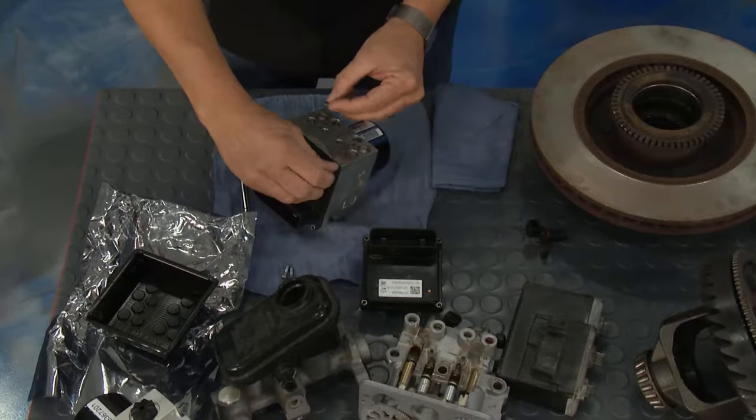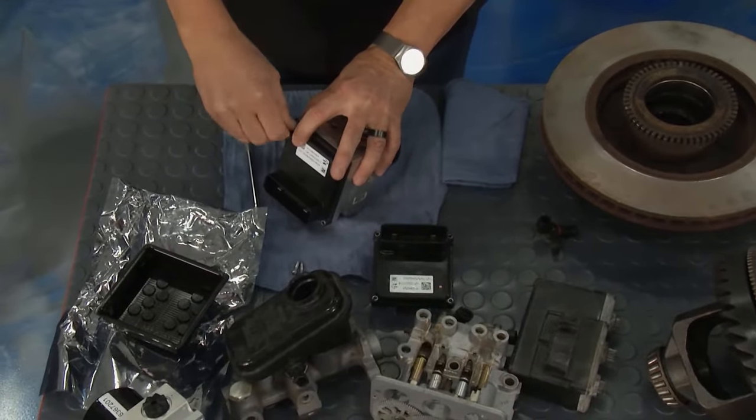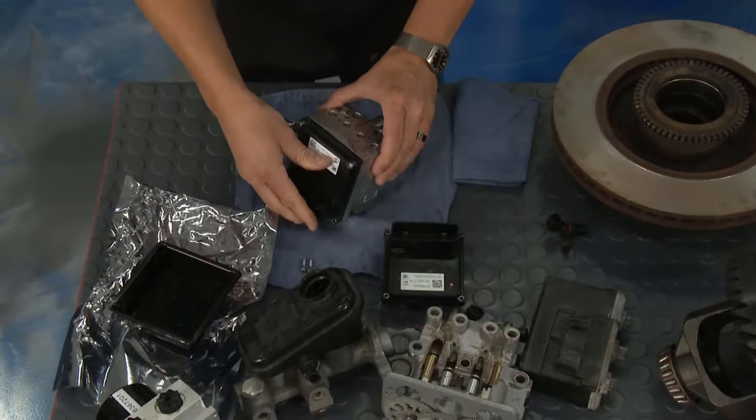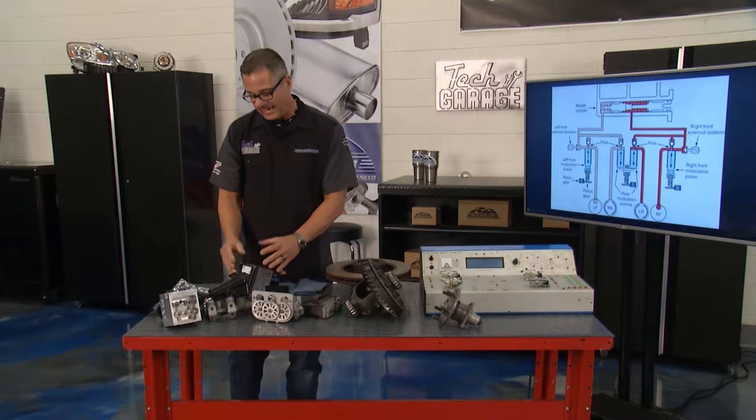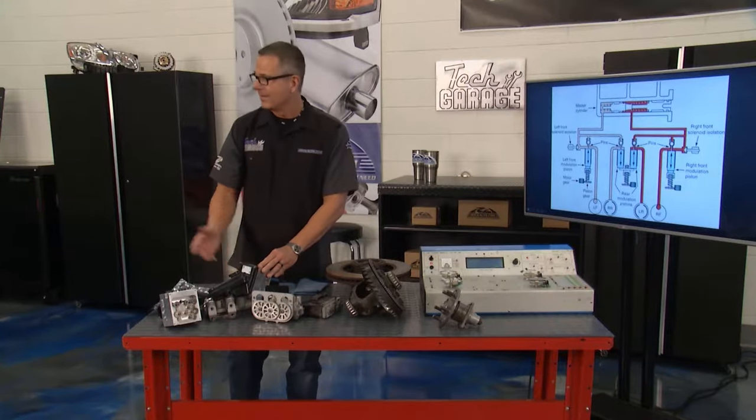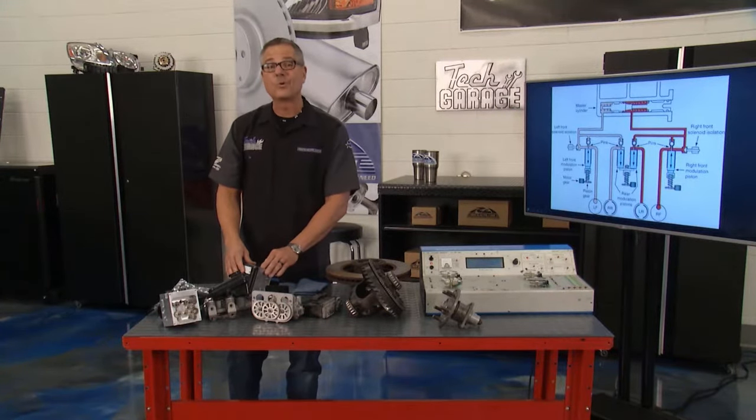We'll torque these down to specifications because this is critical, once again, because we got a pressure transducer reading all the pressures inside of there. So we'll torque that down to specifications. All we have to do is get this back over to Brian so he can reinstall it. We'll be on our way with an Impala. We won't have an ABS light. No worries.